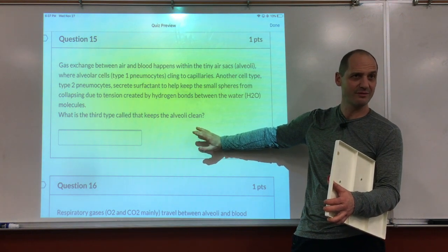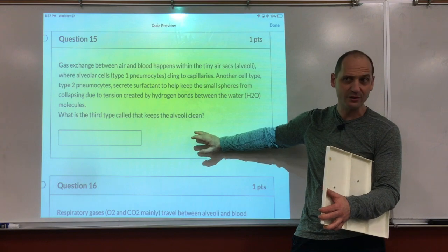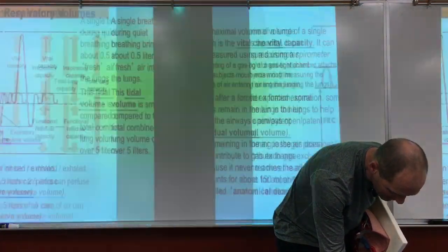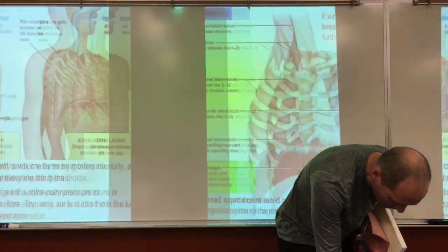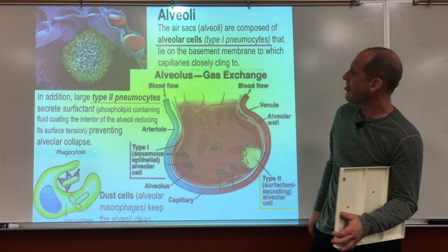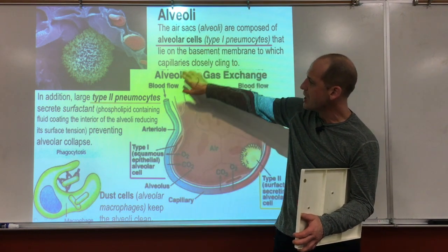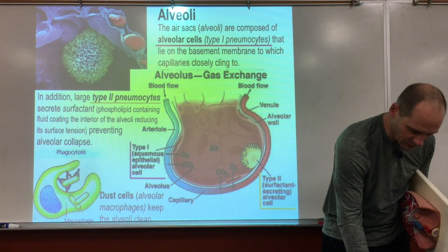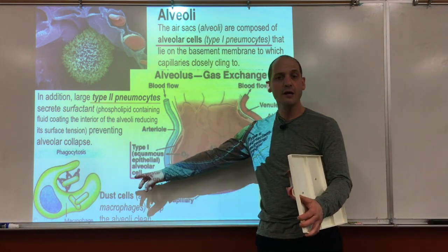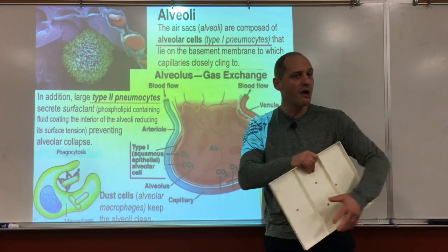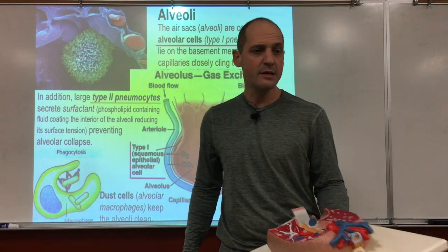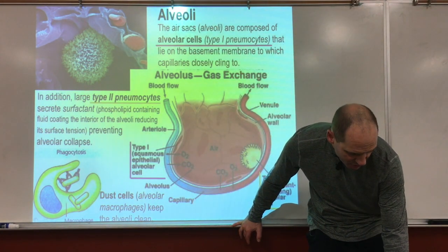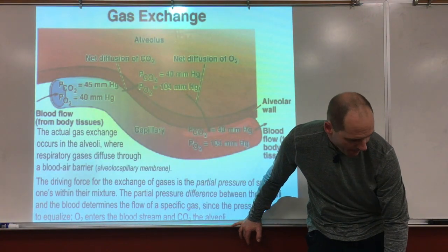A third cell type keeps the alveoli clean — those are called dust cells. They're basically macrophages — immune cells — that act like a vacuum. In the lungs they're called dust cells; in the skin they're Langerhans cells; in the liver they're Kupffer cells.